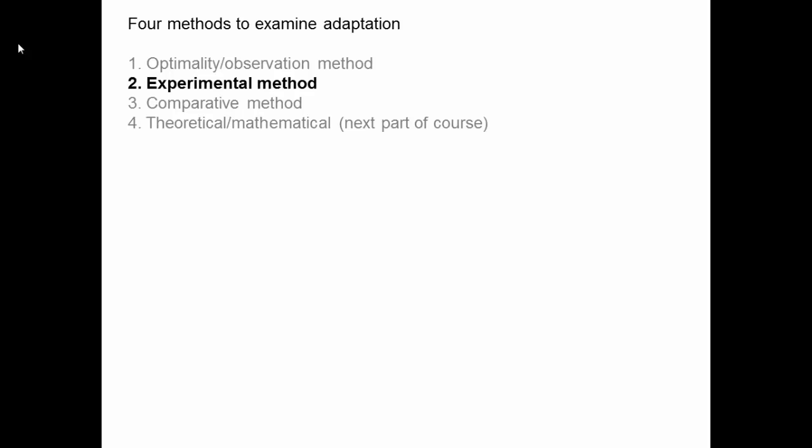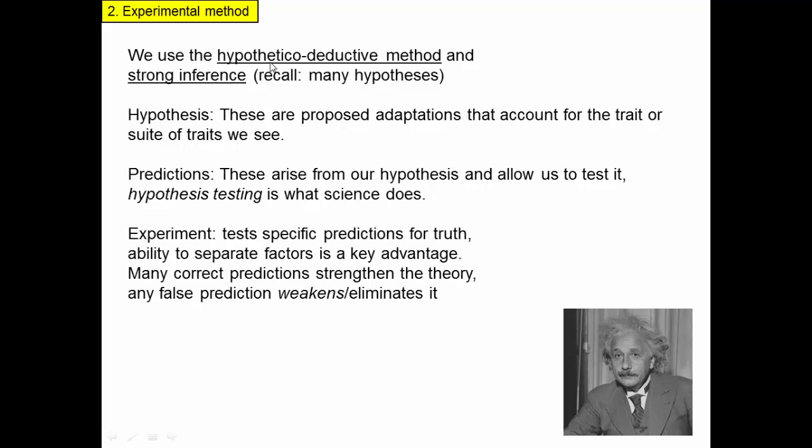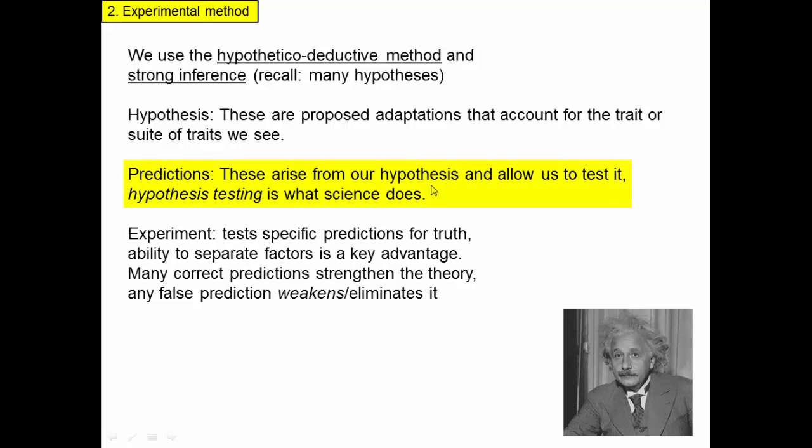Our second method to pursue our adaptationist program is the experimental method. To recall, we use the hypothetical deductive method and strong inference — we're doing deduction with multiple hypotheses. We have a hypothesis; there are proposed adaptations that account for a trait or suite of traits we see. We make predictions that arise from our hypothesis and allow us to test it. And arguably, hypothesis testing is a definition of science.